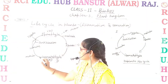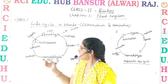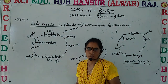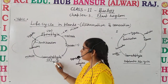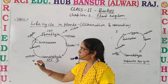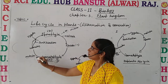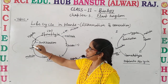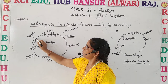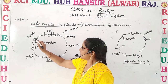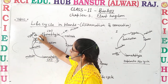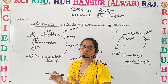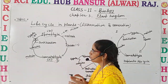These gametophytes later on produce gametes — male and female gametes. But these gametes are produced due to the process of mitosis, not meiosis, because the gametophyte is already haploid in nature. These gametes later on get fused and they form a zygote, which is diploid in nature. The zygote is the first cell of the sporophytic generation or sporophytic phase.